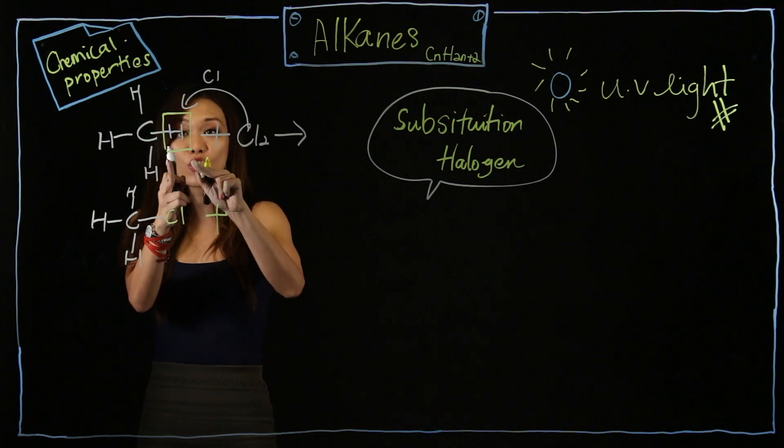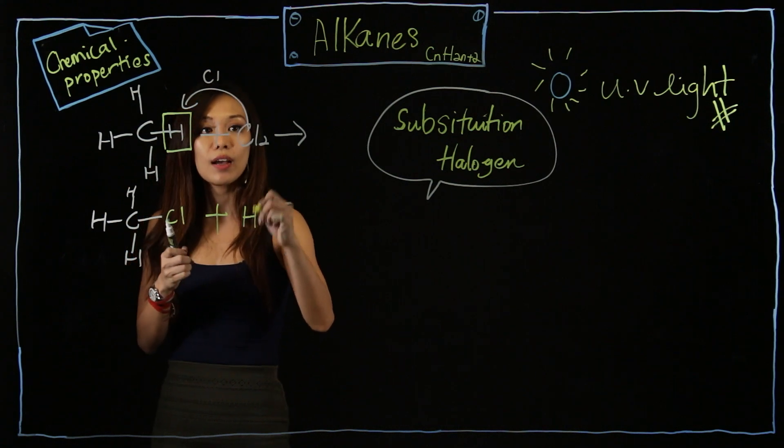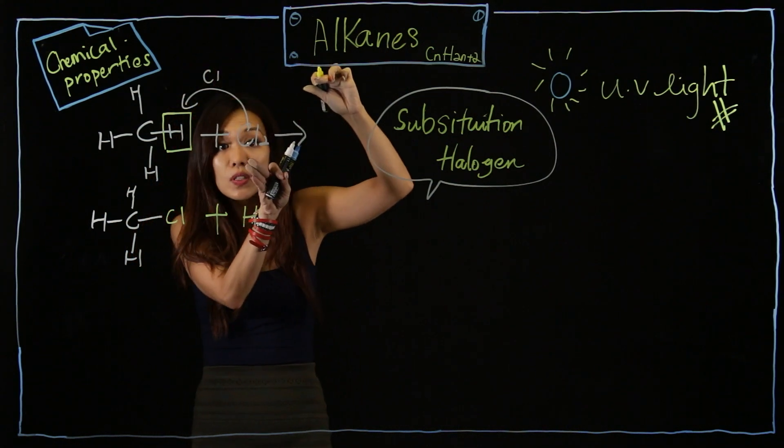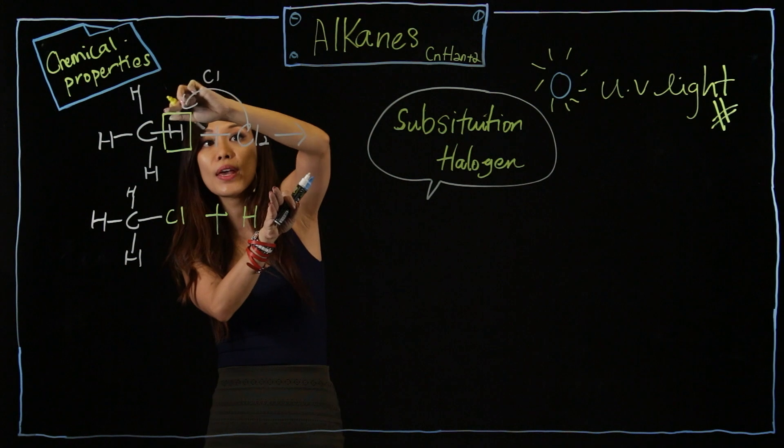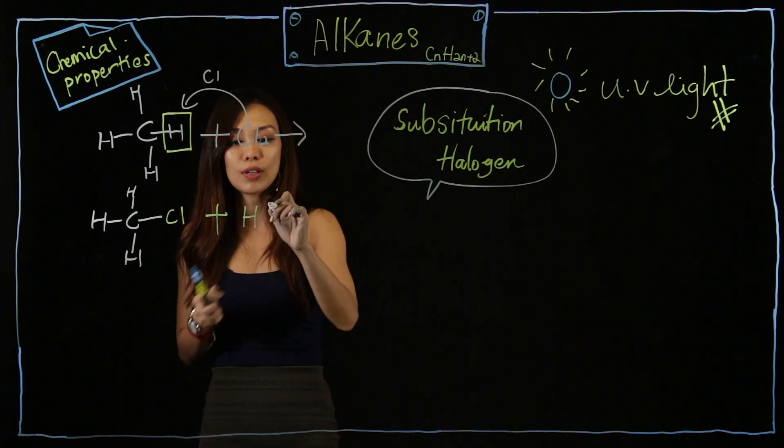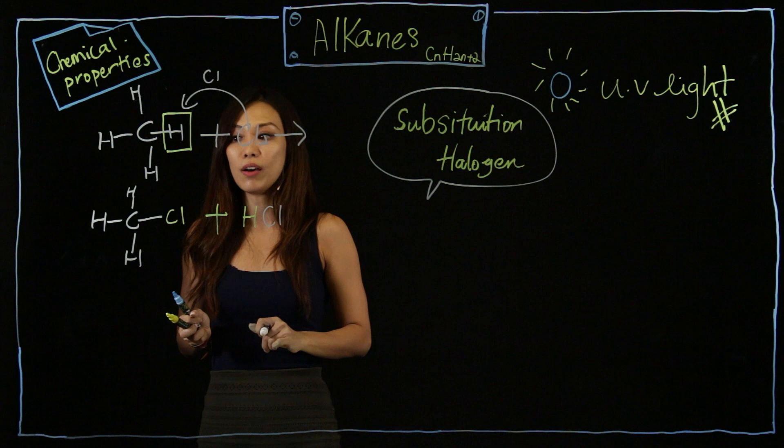Plus, because this H is kicked out, I will have one H here. Cl go in, there are two Cl, right? So once Cl go in, I left with another one. They will attach together to give me HCl.